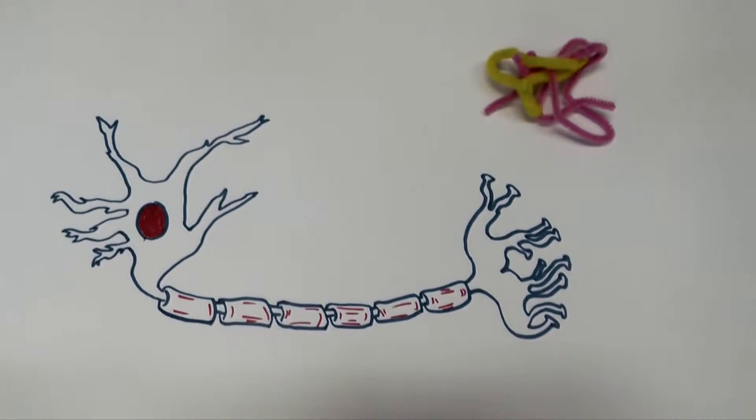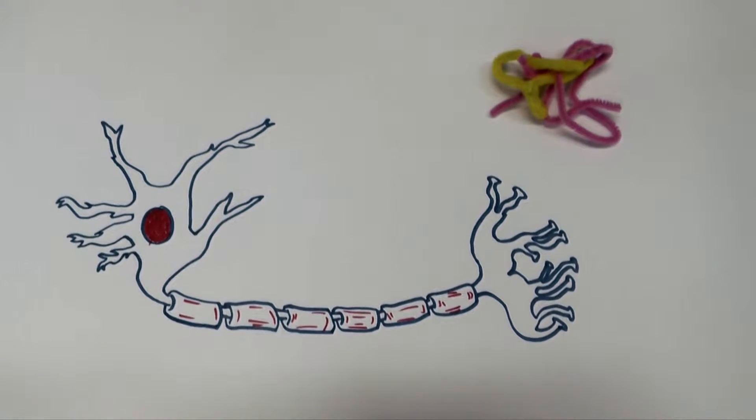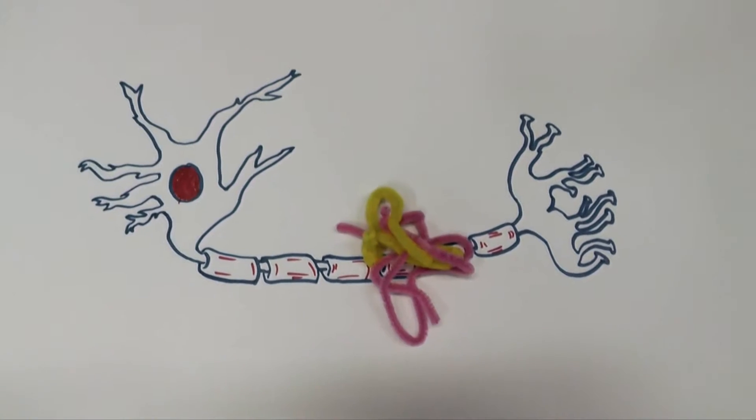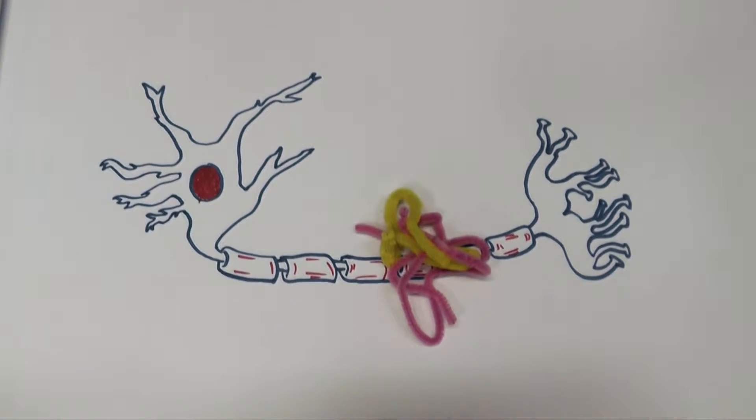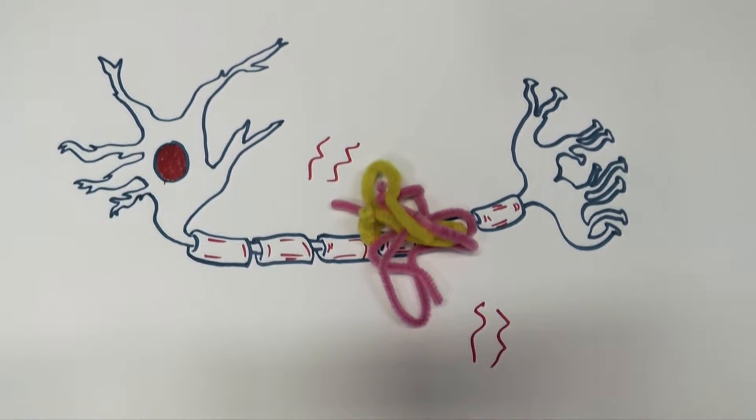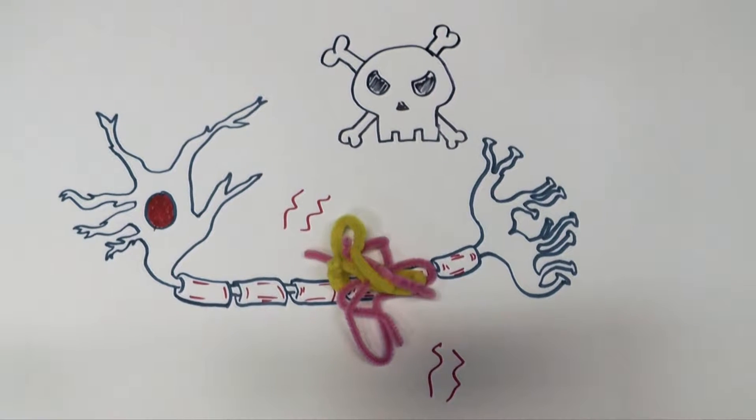One of the pathological hallmarks of Alzheimer's disease is the aggregation of protein plaques in the brain. The protein that makes up these plaques is called amyloid beta and these plaques are thought to induce severe neurodegeneration and neuroinflammation.